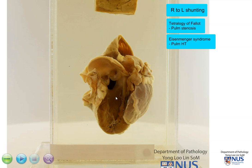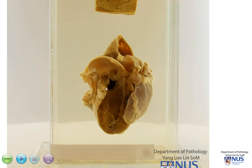Again, this then exceeds the pressure in the left heart and we get reversal of the flow — initially left to right, which then becomes right to left. This phenomenon is known as Eisenmenger syndrome. Whenever there is right-to-left shunting, there is cyanosis, because there is mixture of deoxygenated blood from the right side of the heart into the left heart and then into the systemic circulation.